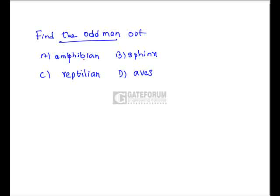Sphinx is a sign or symbol of mystery, half woman half lion, it's a mythological creature. Reptilian, you know, like the crawling or creeping creatures like snakes, lizards. Aves is the category of living creatures like birds. Therefore amphibian, reptilian, and aves are different categories of living creatures, whereas sphinx is a mythological one which is not a class or category. Therefore B is the odd man out.